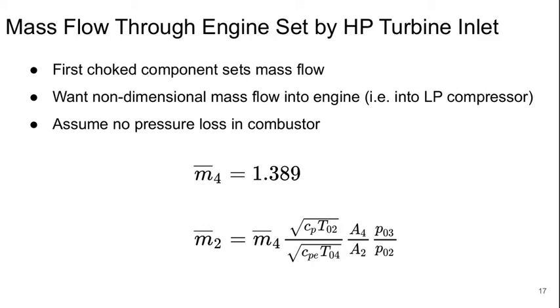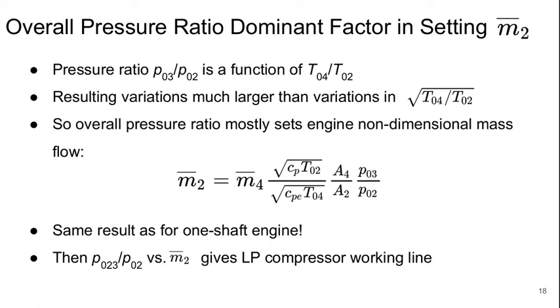Now, the mass flow through the engine is going to be set by the high-pressure turbine inlet because the flow is going to be choked there. Basically the first choked component in the engine is what sets the whole mass flow. And we want the non-dimensional mass flow into the engine, basically into the low-pressure compressor. If we assume no pressure losses in the combustor, then we know M bar 4, then M bar 2, if it's the same physical mass flow, can just be related through total temperature, specific heat area, and pressure ratios.